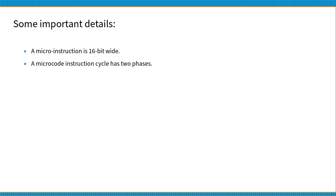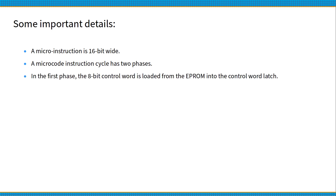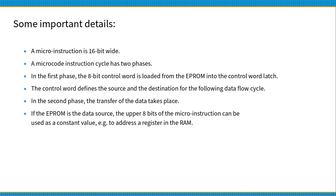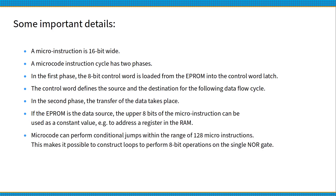Here are some important details about MyForth. A micro-instruction is 16-bit wide. A micro-coded instruction cycle has two phases. In the first phase, the 8-bit control word is loaded from the EEPROM into the control word latch. The control word defines the source and destination for the following data flow cycle. In the second phase, the transfer of data takes place. If the EEPROM is the data source, the upper 8 bits of the micro-instruction can be used as a constant value, e.g. to address a register in the RAM. Microcode can perform conditional jumps within the range of 128 micro-instructions, making it possible to construct loops to perform 8-bit operations on the single NOR gate.